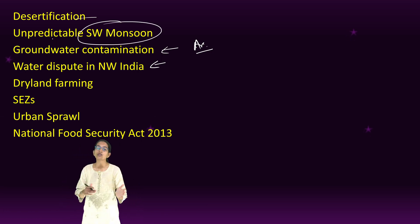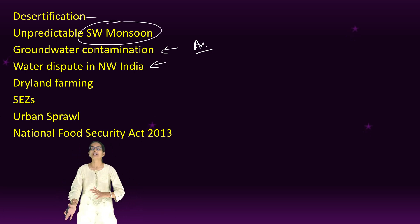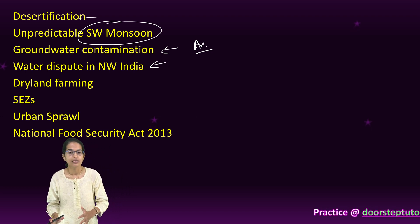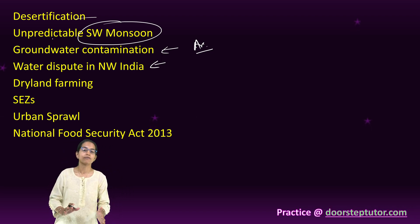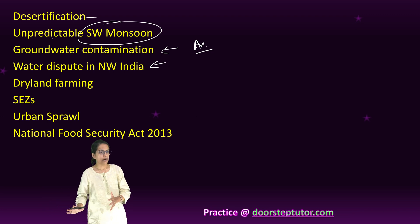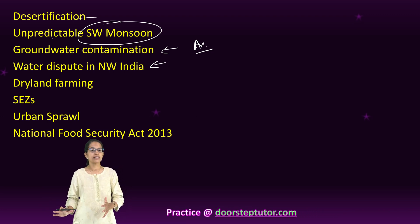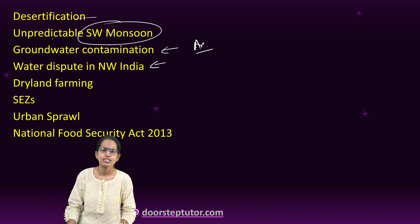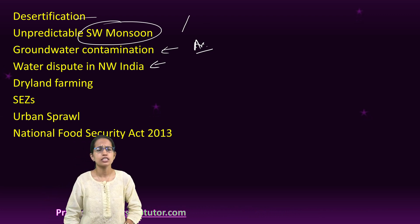The unpredictable behavior of the southwest monsoon in recent years is something we have covered in our recent editions of the Down to Earth analysis. Desertification and the expansion of desertification were also important topics.